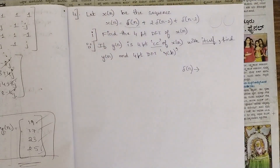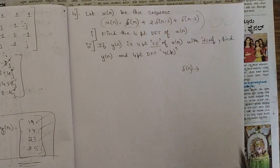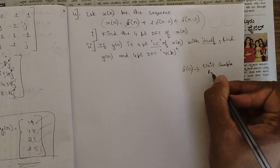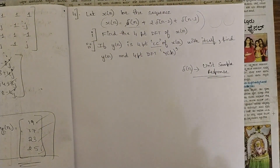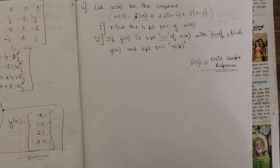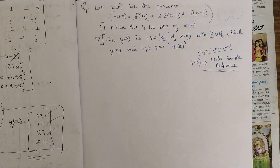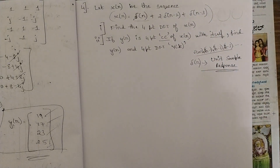Now, the sequence is not directly given — only the equation is provided. So how do we write the sequence from this equation? Delta of n is called the unit sample response. The unit sample response is of the order: n, n−1, n−2, n−3, and so on. So the sequence goes δ(n), δ(n−1), δ(n−2), δ(n−3), which is one and the same thing.